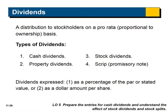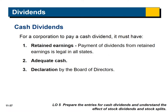Dividends are a distribution to stockholders on a pro rata — proportional ownership — basis. If you own 10% of the stock, you get 10% of the dividends. We've been talking about cash dividends, but there are also property dividends (assets besides cash), stock dividends (additional shares of stock), and scrip dividends (a promise to pay). With cash dividends, you cannot pay them unless you have retained earnings and enough cash, and the board of directors must declare them, at which point it becomes a legal liability.